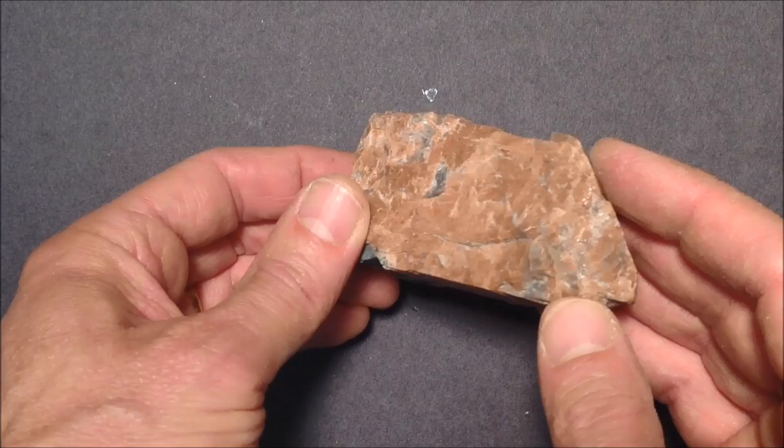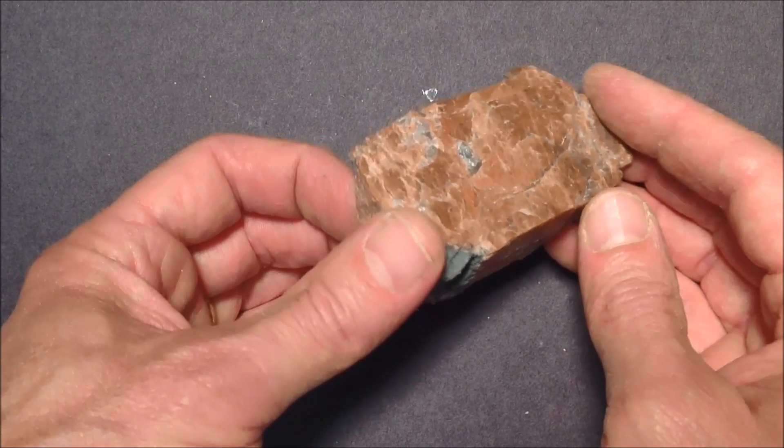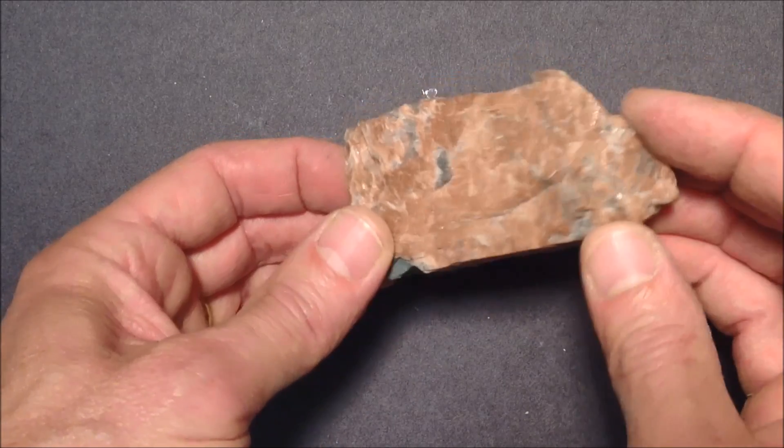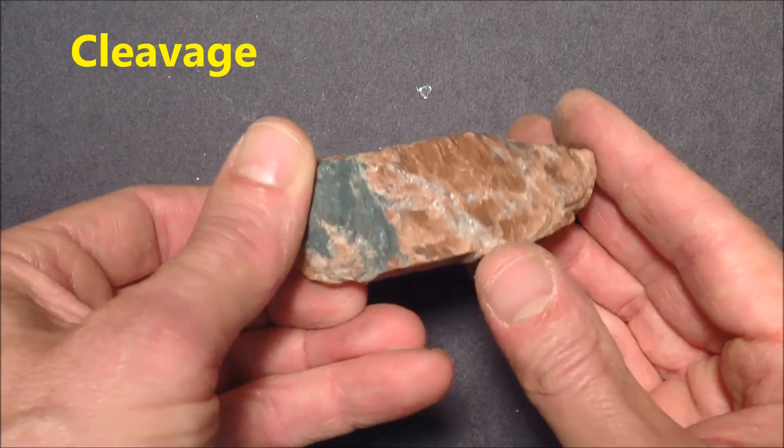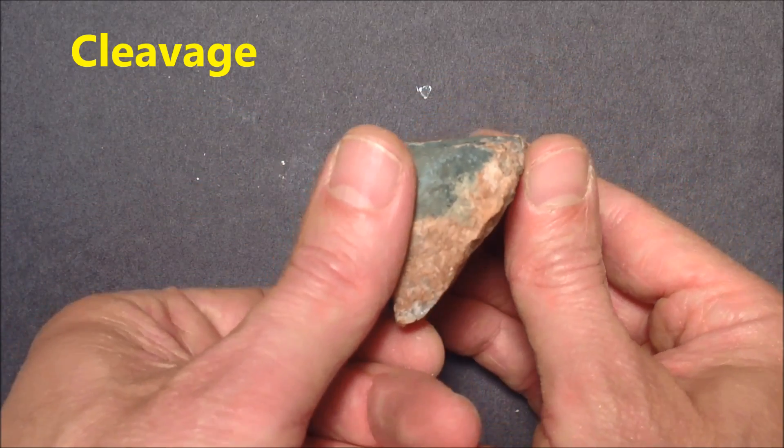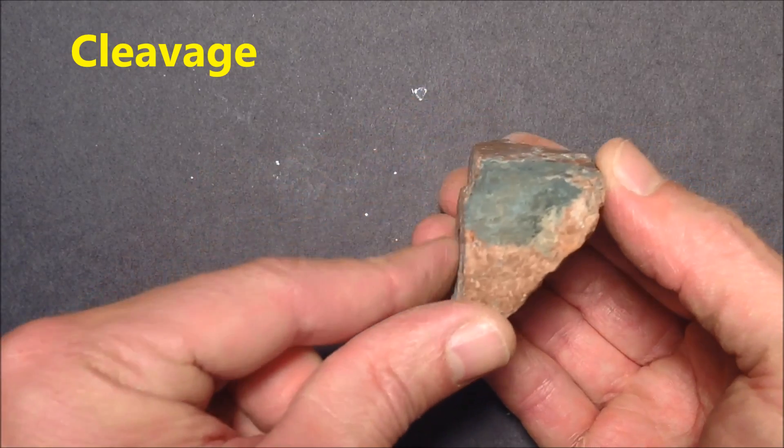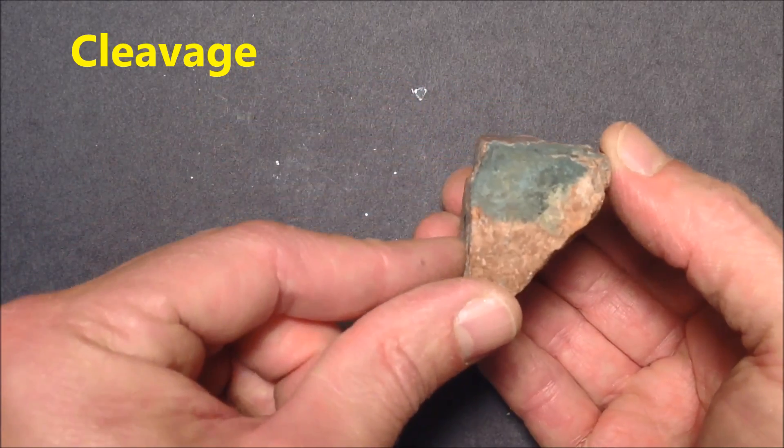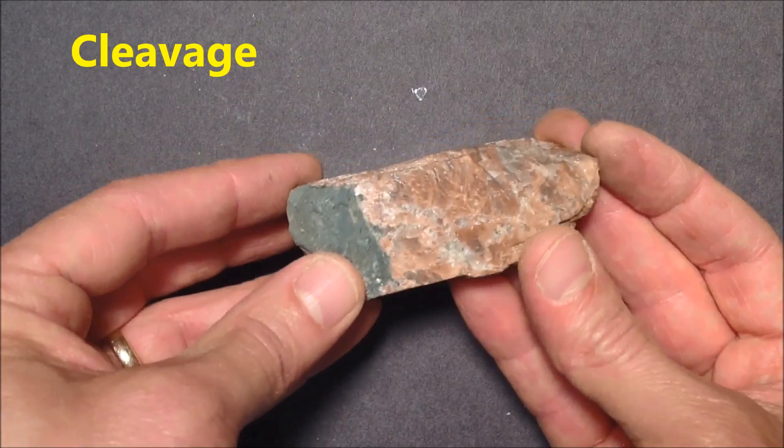You see that right there, how it reflects the light? Again, I have a very harsh light here. So this, that is cleavage. It breaks flat on this side here. And you can see it here, or hopefully you can see it there. You see this angle right here, that it makes. So that is cleavage.